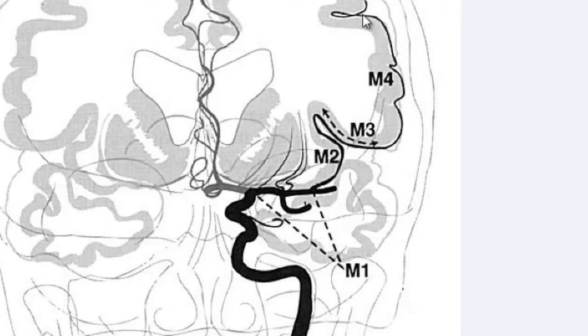Any surface vessels — any branches of the middle cerebral artery visible on the surface of the hemisphere — those are all referred to as M4.